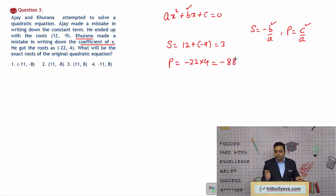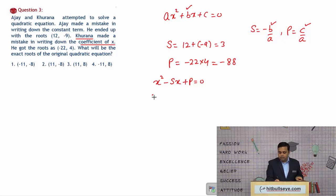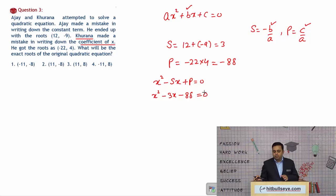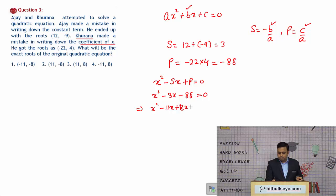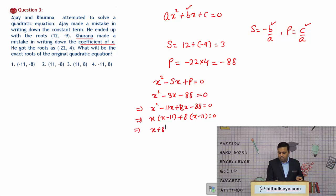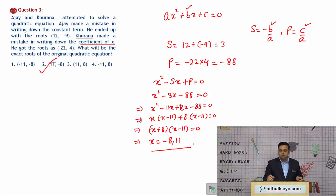We have sum of roots = 3 and product of roots = −88. The quadratic equation is x² − sx + p = 0, so we get x² − 3x − 88 = 0. Factorizing: x² − 11x + 8x − 88 = 0, giving x(x − 11) + 8(x − 11) = 0, so (x + 8)(x − 11) = 0. The roots are −8 and 11, so option 2 is the answer.